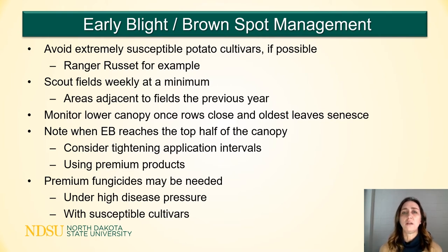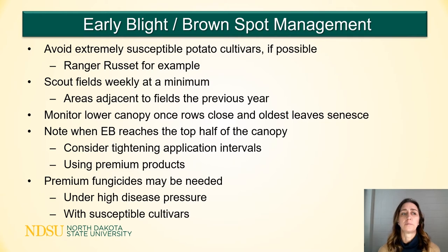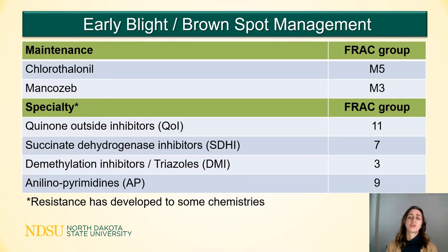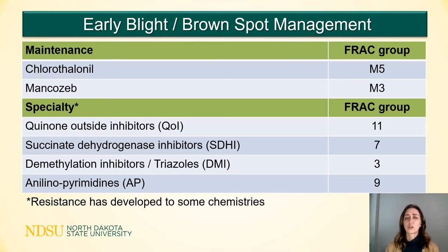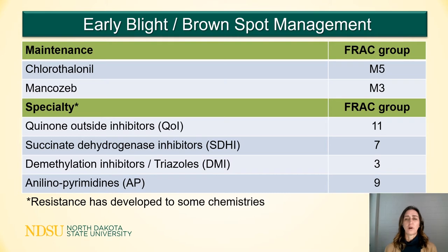You may also need to incorporate a specialty or premium fungicide for the management of early blight. In this table, I've split the fungicides into two general groups. On the top are the maintenance fungicides, which include multi-site mode of action chemistries like chlorothalonil or mancozeb. In the bottom section, I've included what I'm calling specialty fungicides — those single-site mode of action chemistries. This is generally the groups we lean on for early blight and brown spot management.